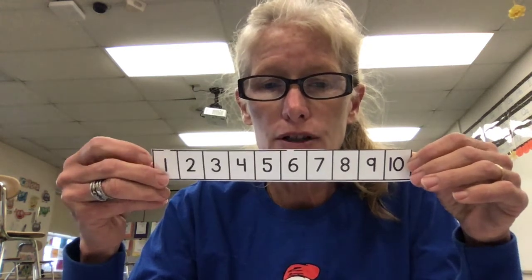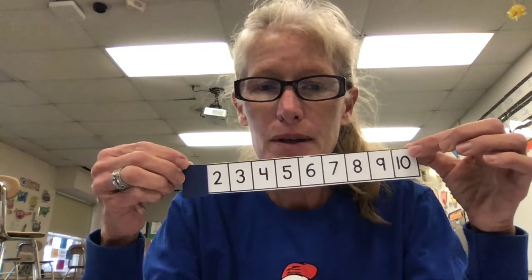I have a number line here and it has one through ten. I am going to cover up a number and I want you to tell me which number is missing. What number is missing? Did you say seven? Good job. Let's do it again — what number is missing? Four. Great job. What number is missing? Did you say one? Good job. One more — what number is missing? Did you say nine? Nice job, my friends.